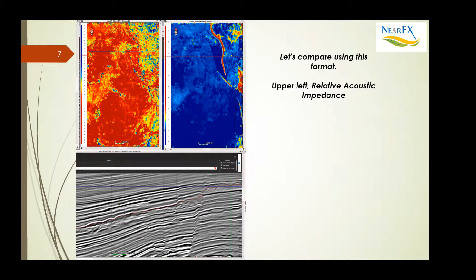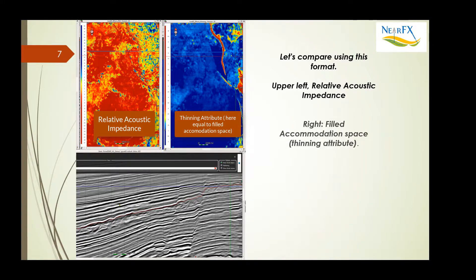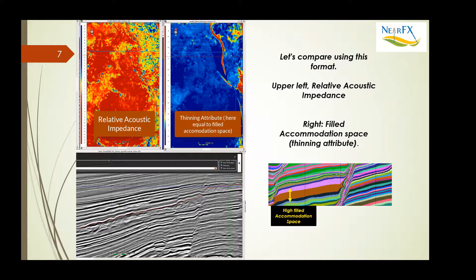Let's talk about that for a second by looking at this format. In the upper left, we have relative acoustic impedance, and in the upper right, what we're looking at is the thinning attribute, which is not possible to make without an RGT model. Here it equals more or less the filled accommodation space during deposition, as the diagram on the bottom right shows.